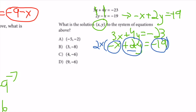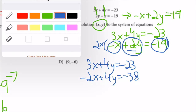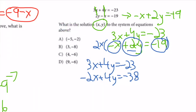After multiplying by 2: 3x + 4y = -23 (first equation unchanged) and -2x + 4y = -38 (second equation doubled). Now both equations have 4y.